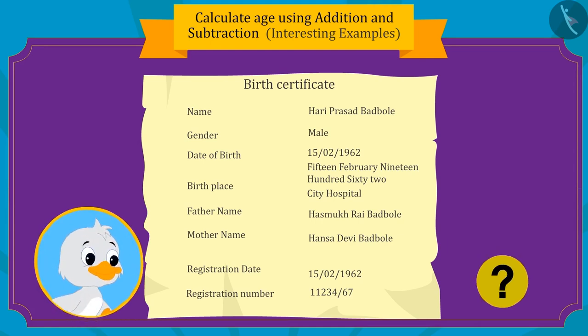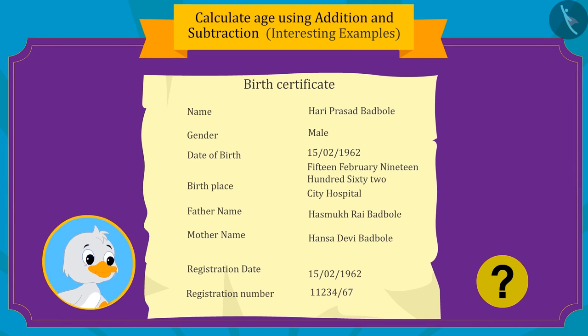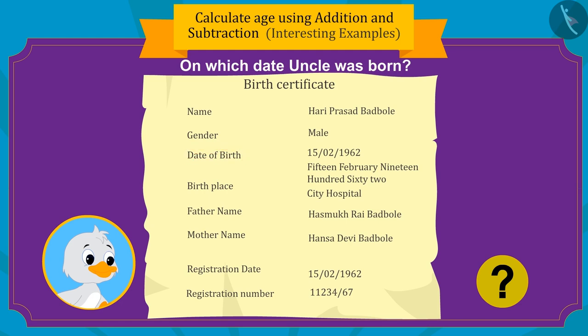Can you tell the date on which uncle was born by looking at his birth certificate? Yes — uncle was born on February 15th, 1962.